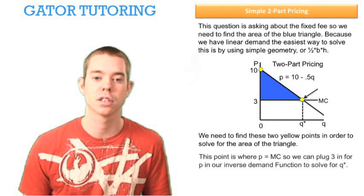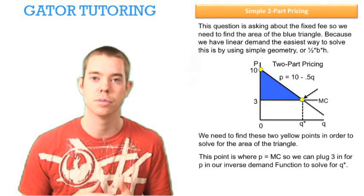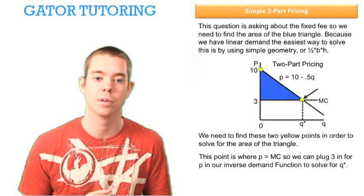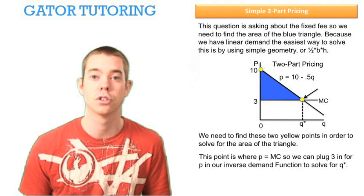Now that we solved for one point, let's look at the second point. This point is where our line price, our inverse demand, intersects our marginal cost curve. So we can plug in 3, which is marginal cost, in for the price variable in our inverse demand function to solve for Q star.